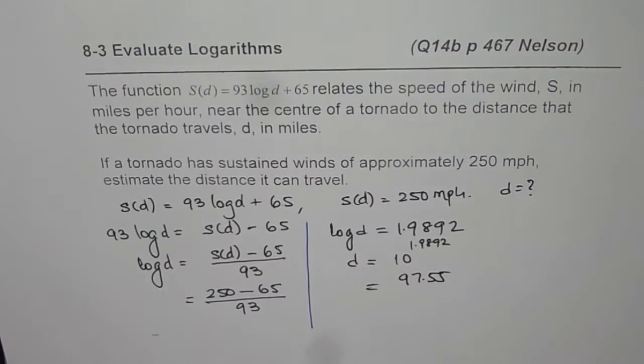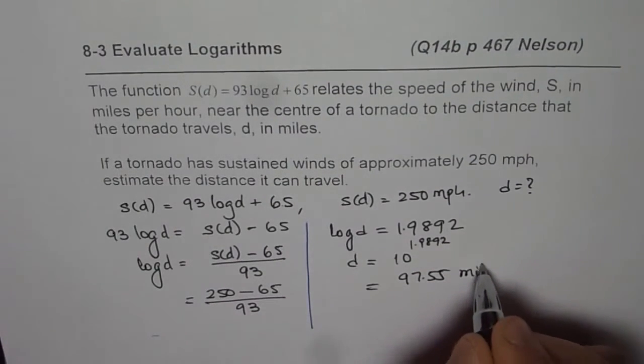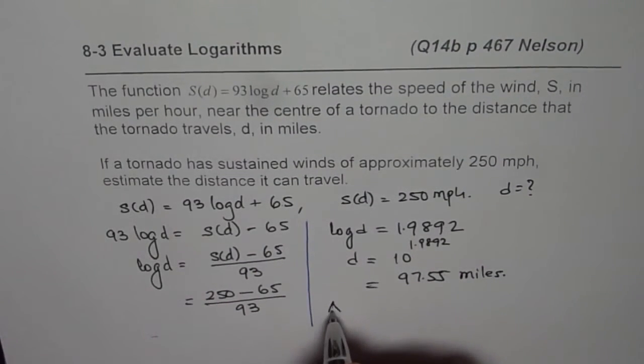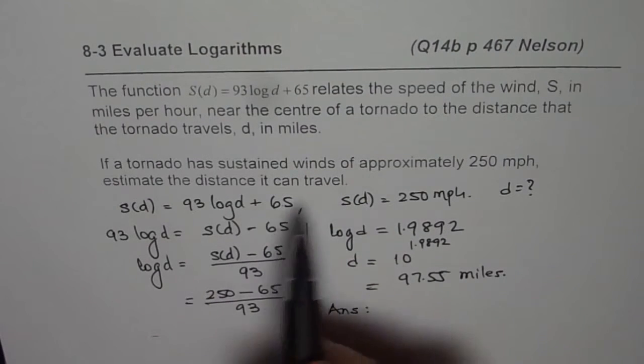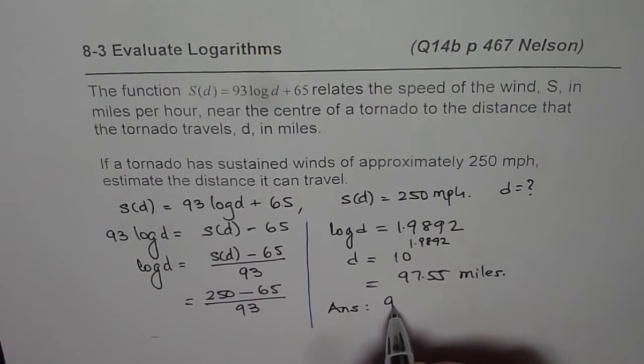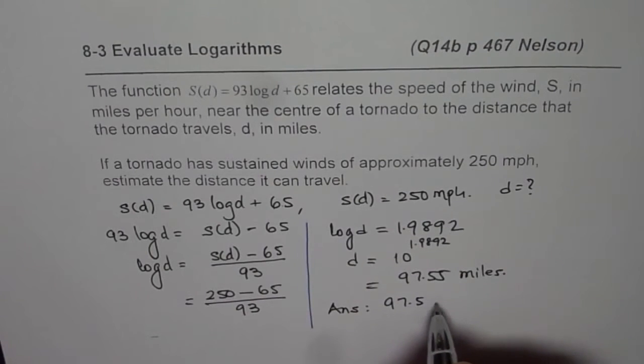And the units are miles. So miles. So our answer is, this tornado will travel to approximately 97.5 miles.